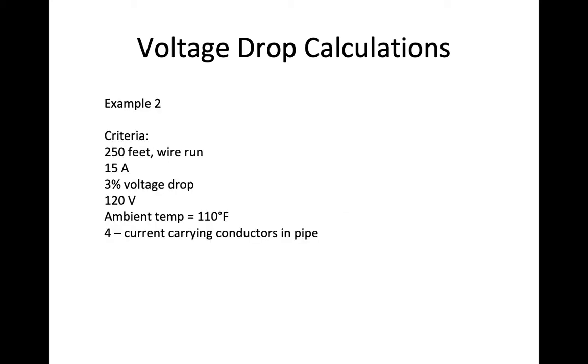Example 2. I have 250 feet of wire run, 15 amps again, 3% voltage drop, but now I decrease the voltage to 120 volts. We're going to run a temperature correction and a pipe fill correction with this in addition. So I'm going to figure out what is the size of conductor I need to get 15 amps from here to there. Then I'm going to apply conditions of use. So this might be on a rooftop or south side of a building that I'm running my pipe. 110 degrees Fahrenheit, 4 conductors in a pipe.